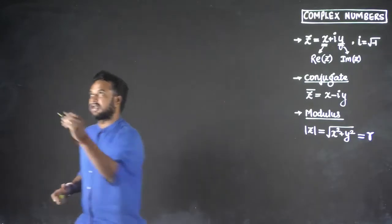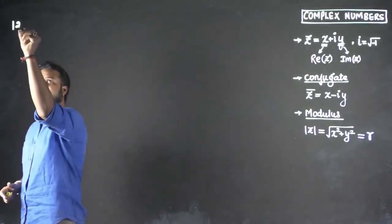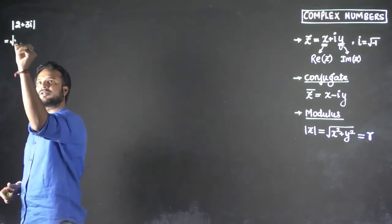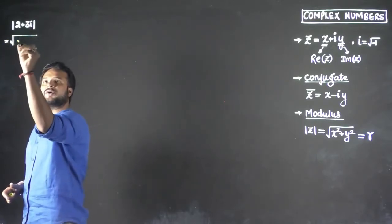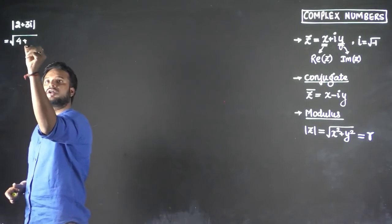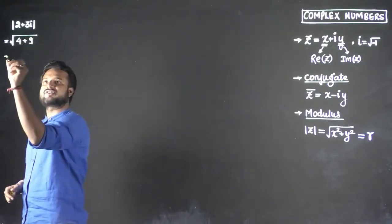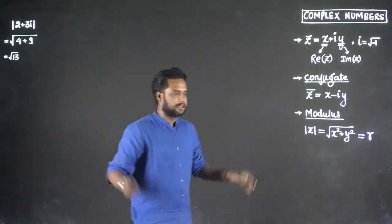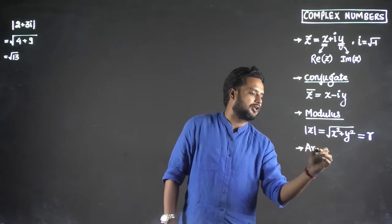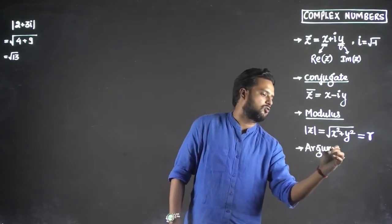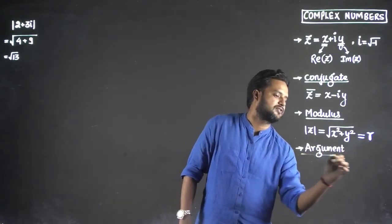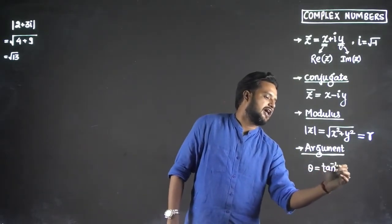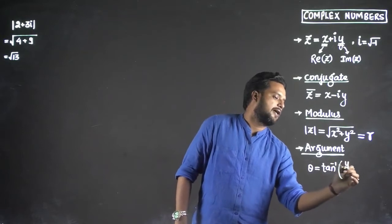If I consider a complex number 2 plus 3i, then what is the modulus? Modulus is nothing but the square root of real part squared plus imaginary part squared — so root of 2 squared plus 3 squared, which is root of 4 plus 9. That's the modulus of a complex number. There is one more thing called the argument, also called the amplitude of a complex number. This is represented as theta and is given by tan inverse of y by x.